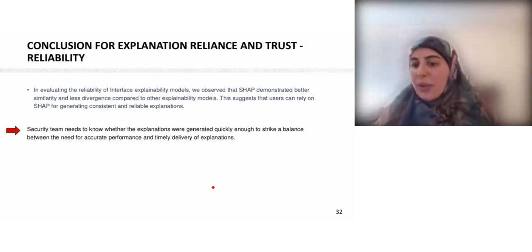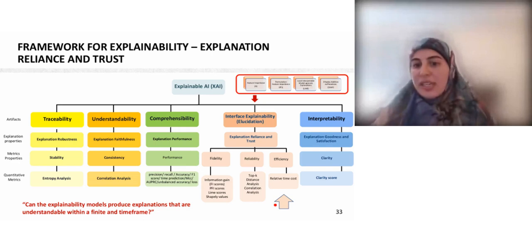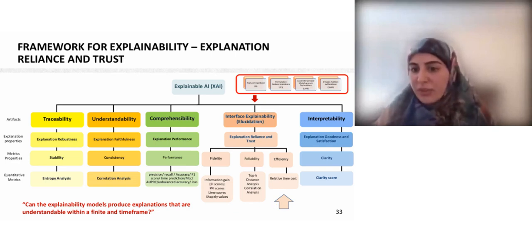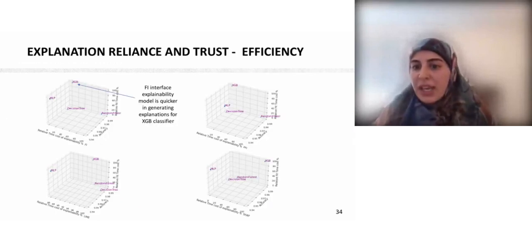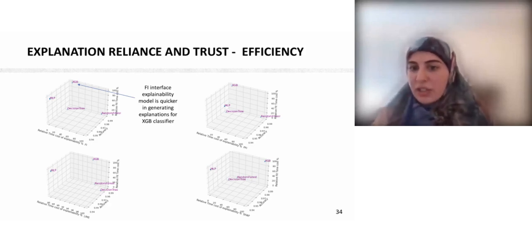Now we want to see how quickly the explanations are generated. For the efficiency metric, we examine whether the explainability model can produce explanations within an acceptable time frame. Looking at a 3D plot, we can see that the FI interface explainability model was the quickest in generating explanations for the XGBoost classifier.